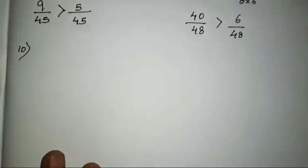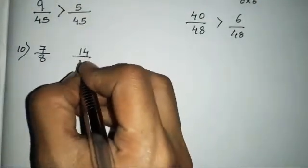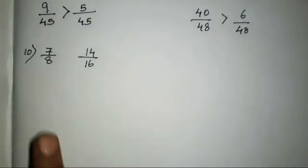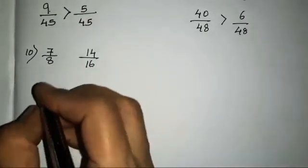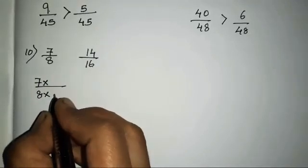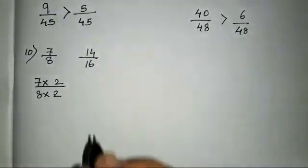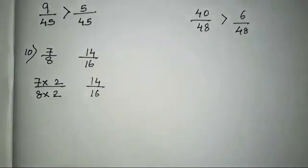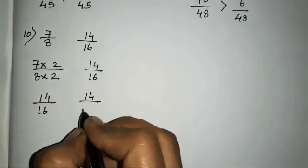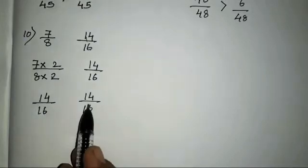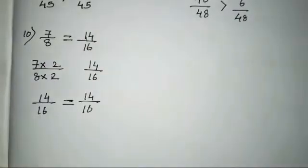The tenth sum is 7 upon 8 and 14 upon 16. In the 8 times table, 16 appears — 8 twos are 16. So multiply 7/8 by 2: 7 twos are 14 and 8 twos are 16. Keeping 14/16 as it is, you now see numerators and denominators are both the same. So put an equal to sign — these fractions are equal.